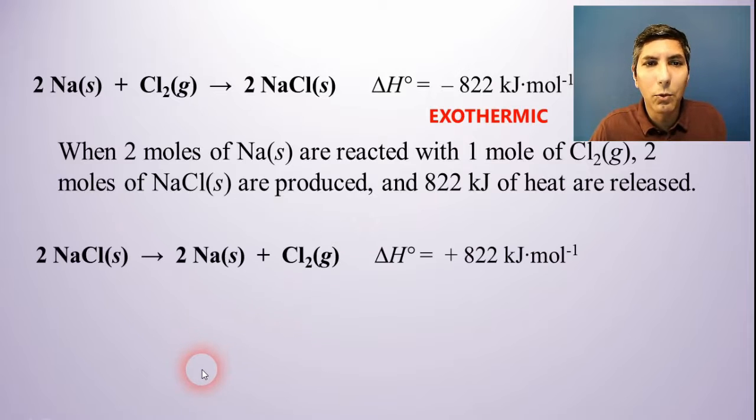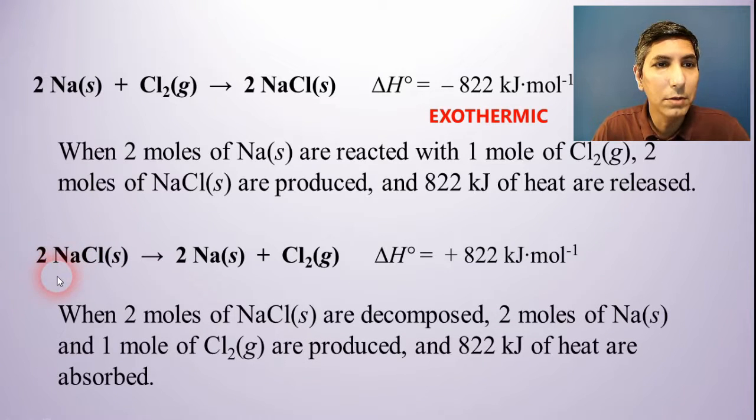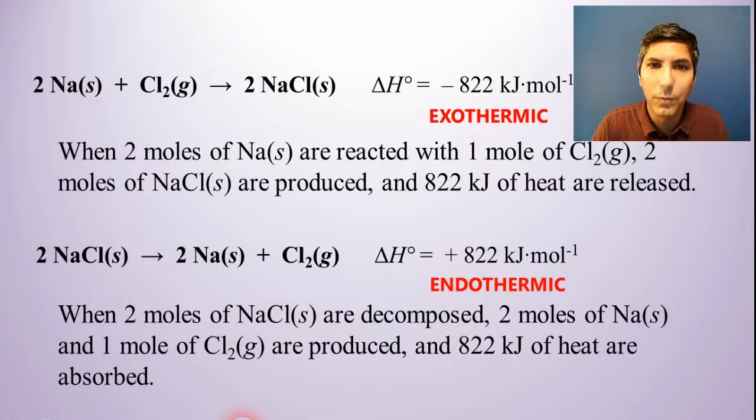Now notice what happens when we reverse the process. We can write this reaction in reverse. In this case, we have 2 moles of sodium chloride solid being decomposed, and the products are 2 moles of sodium solid and 1 mole of chlorine gas. But notice what happens to our delta H. When we flip the reaction, it changes the sign of delta H. So now for the reverse process, it is going to require an absorption of 822 kilojoules per mole, and that means it would be endothermic. Flipping the reaction changes the sign of delta H.